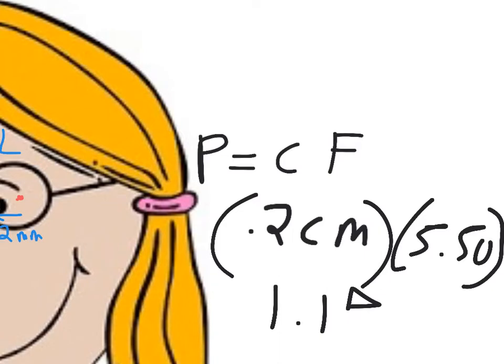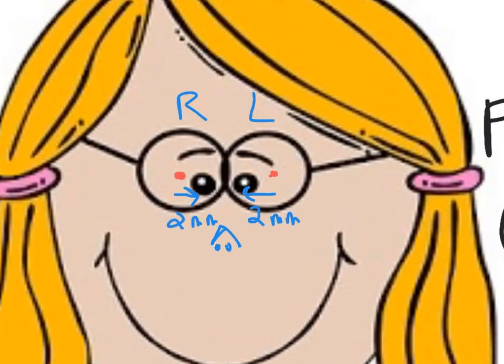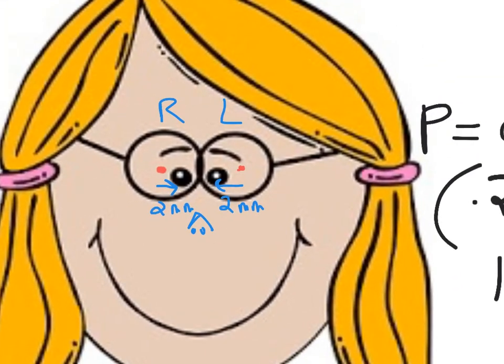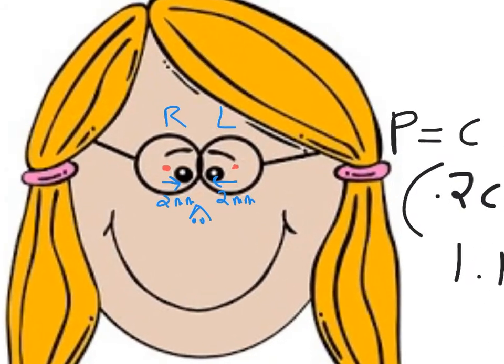This 1.1 prism diopter is the induced prism for just one eye. However, both eyes are decentered. So now you have a mixed decision: do you add or do you subtract? You have 1.1 prism diopters in the right eye and 1.1 prism diopters in the left eye. The key here is whether the lens is minus or positive.